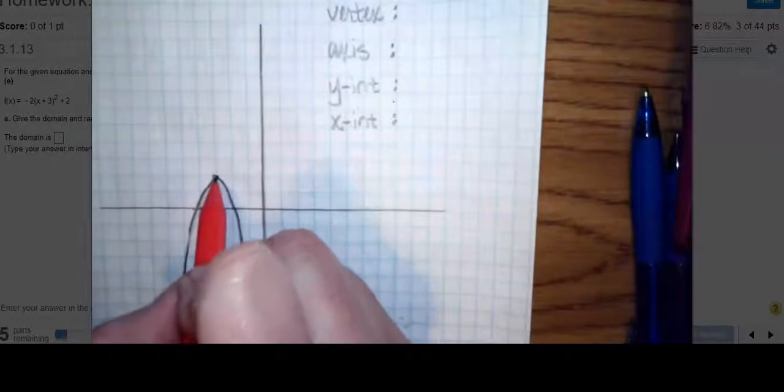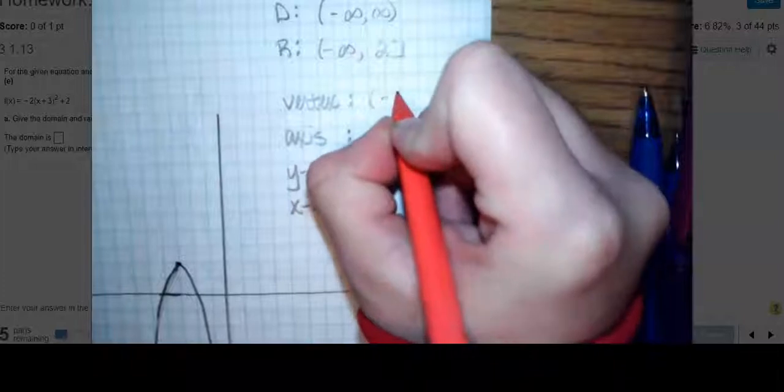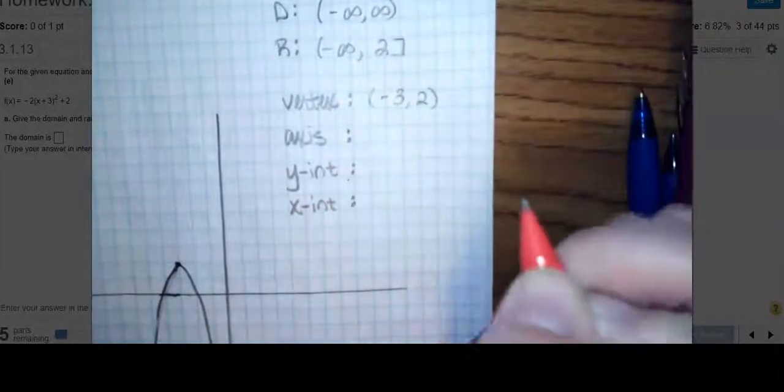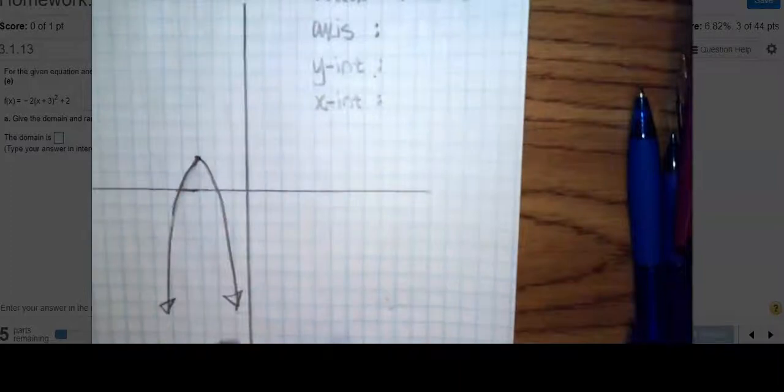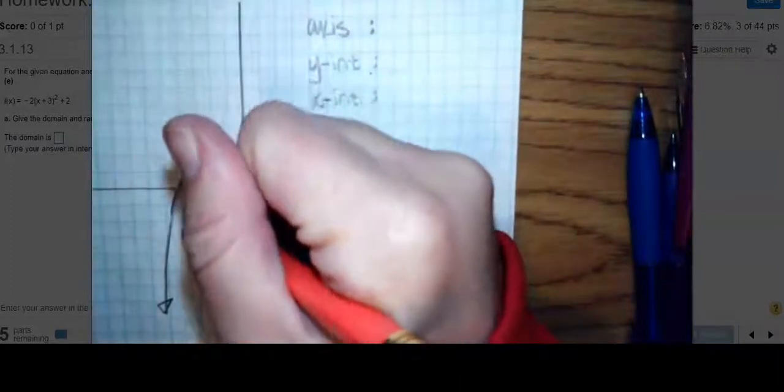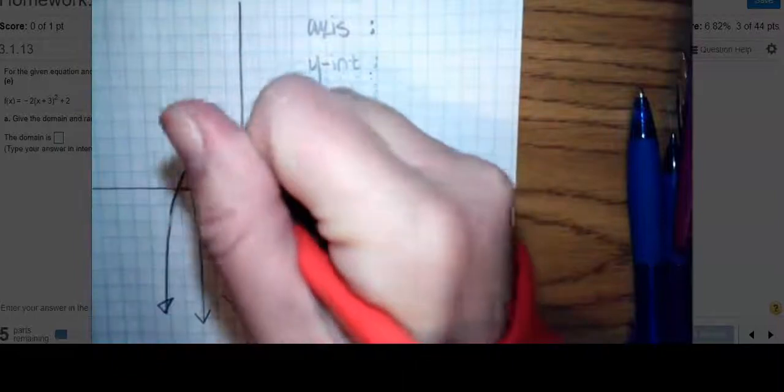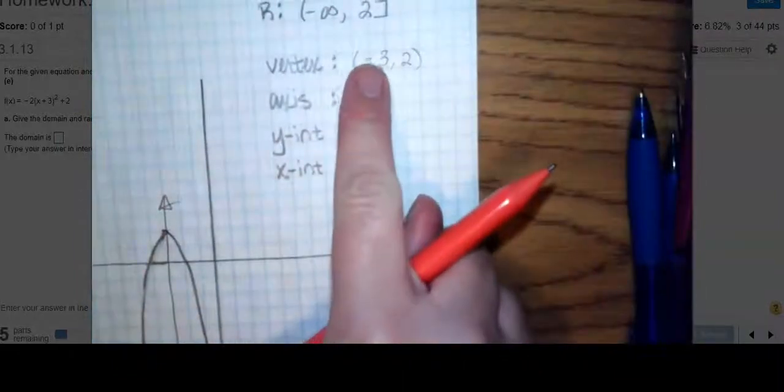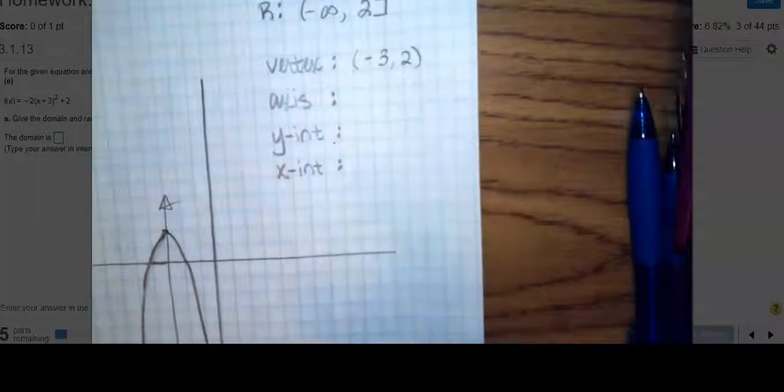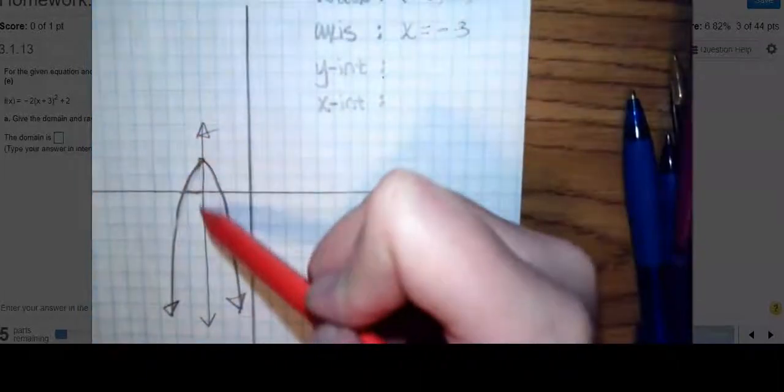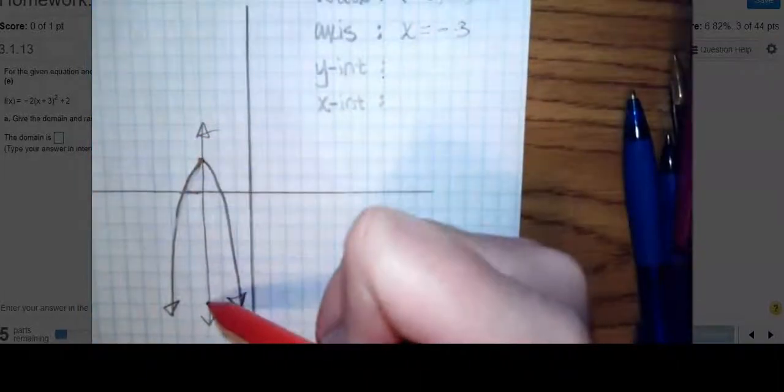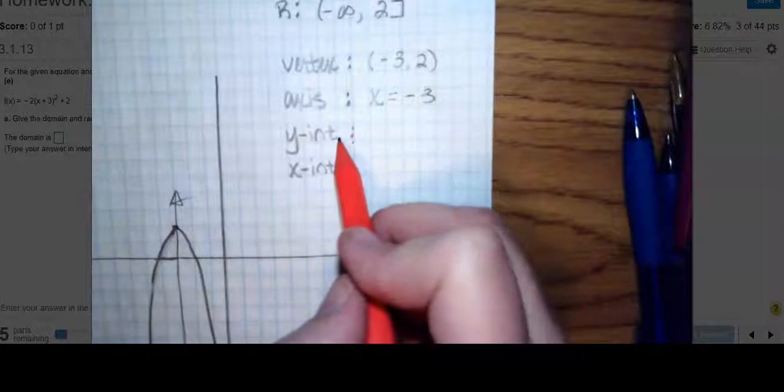What's your vertex? Your vertex is where it changes direction. So 1, 2, 3, 1, 2. My vertex is at (-3, 2). That's a coordinate of a point. What's your axis of symmetry? It's where you would fold this so that its arms would lay on top of itself. So it's x equals your x coordinate of your vertex, x = -3. I'm a vertical line that slices through the x-axis at -3.